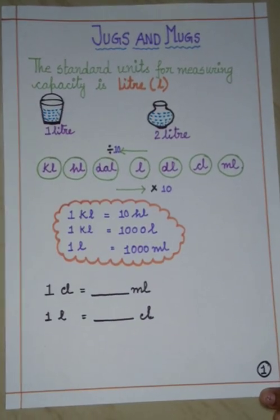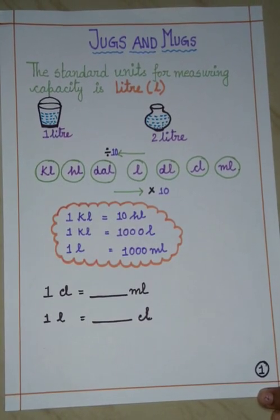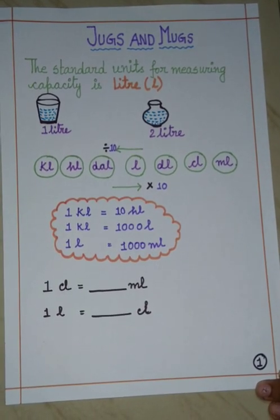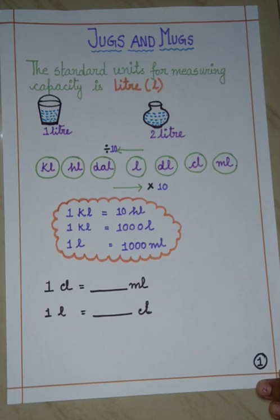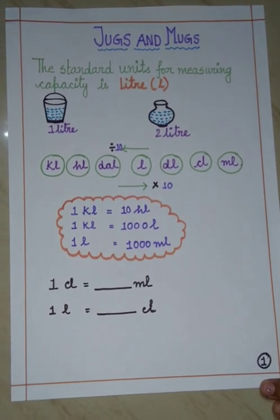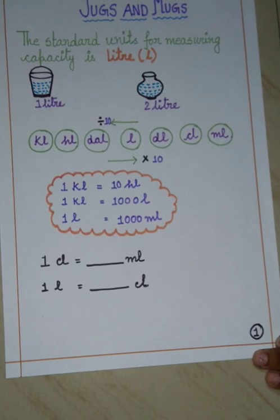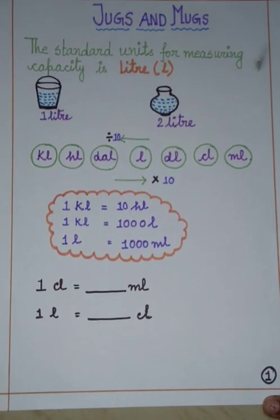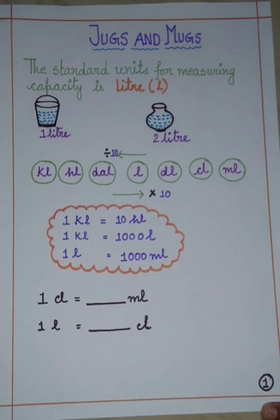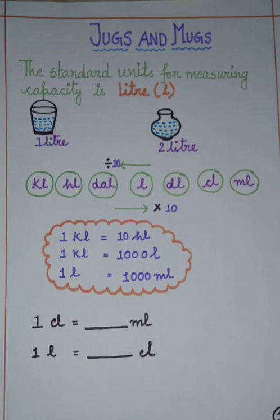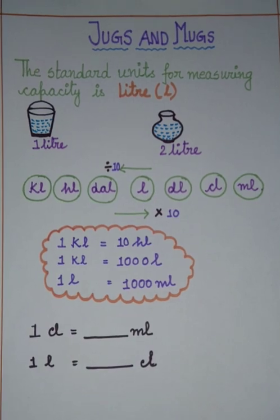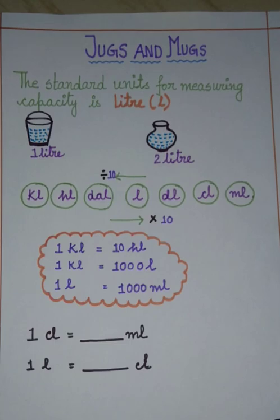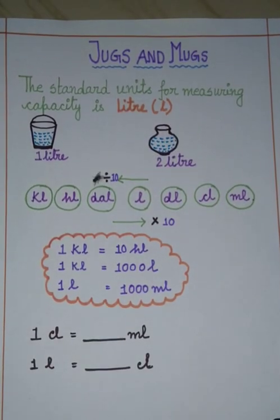Hello students, how are you all? I hope you all are fine and doing good. Today we will start a new chapter that is Jugs and Mugs. Before starting the chapter, I want to tell you what is in the chapter. In this chapter, we will know how we can measure different liquids — whether it is in a bucket, a glass, or a bottle, wherever it is, we can measure it.